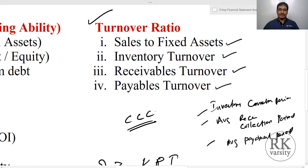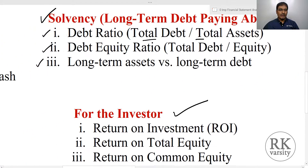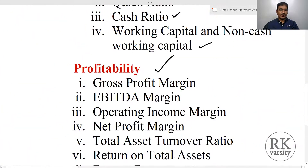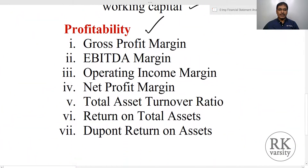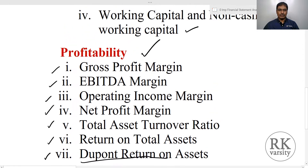Coming to profitability ratios, in this course we are covering gross profit margin, EBITDA margin, operating income margin, net profit margin, total asset turnover ratio, return on total assets, and very importantly, the DuPont return on assets ratio.